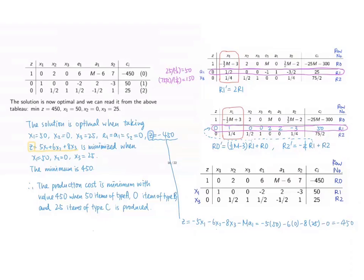This corresponds to the conclusion that z equals 5x1 plus 6x2 plus 8x3 is having a minimum value of 450. This is achieved when taking x1 equals 50, x2 equals 0, and x3 equals 25.